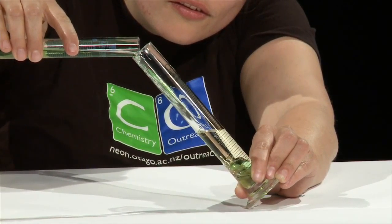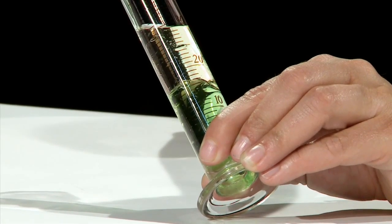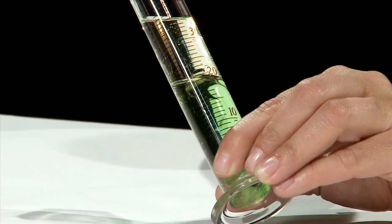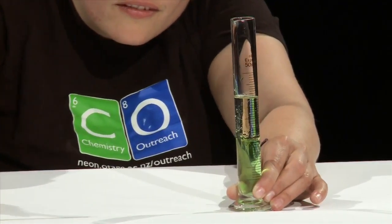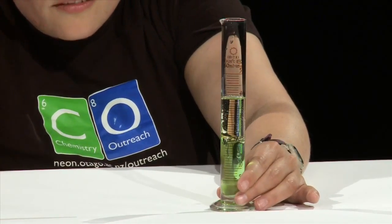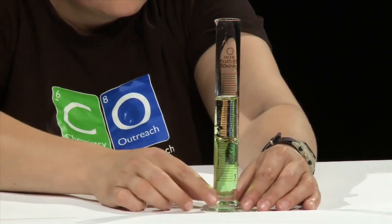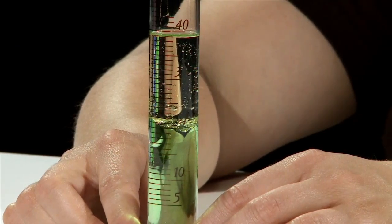Notice how the water and the oil do not mix. Instead they form two layers with the water at the bottom. This indicates that the water is denser than the oil and that the two liquids are immiscible, meaning they don't mix together.